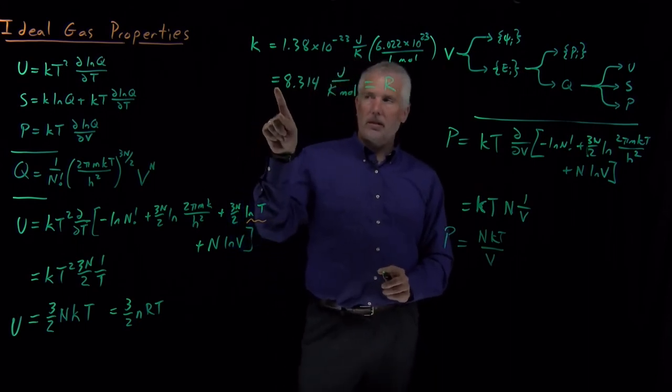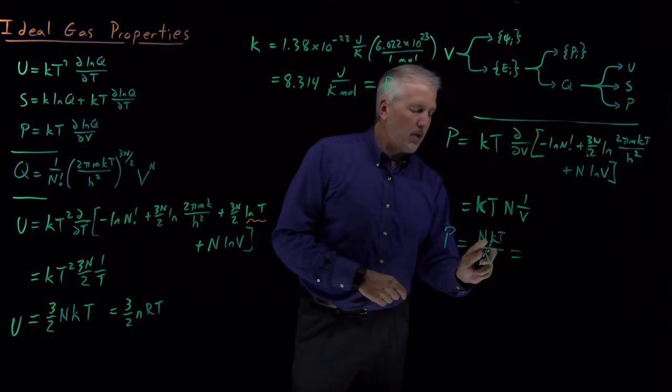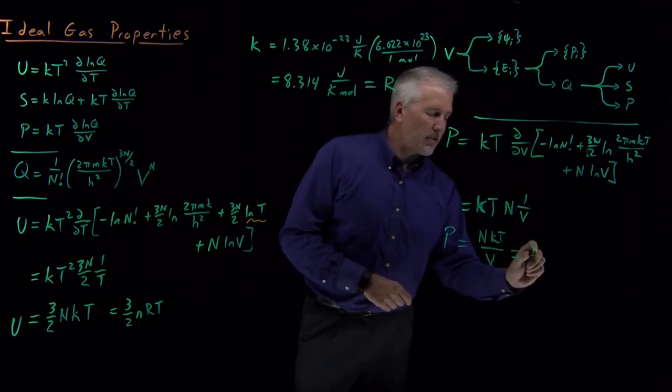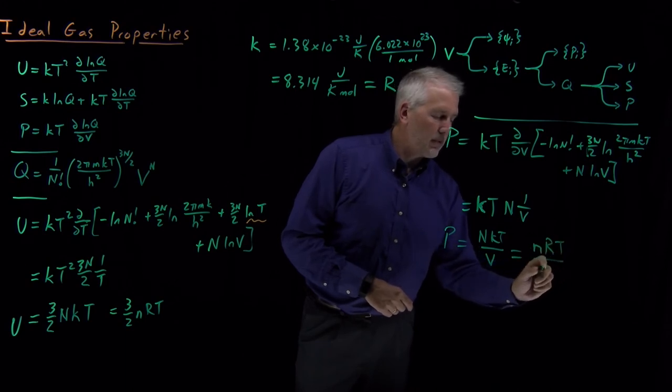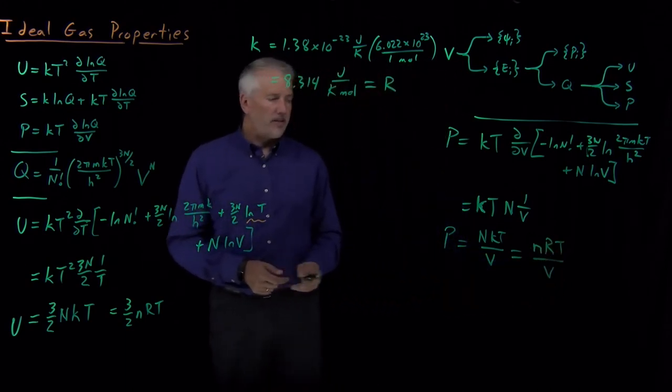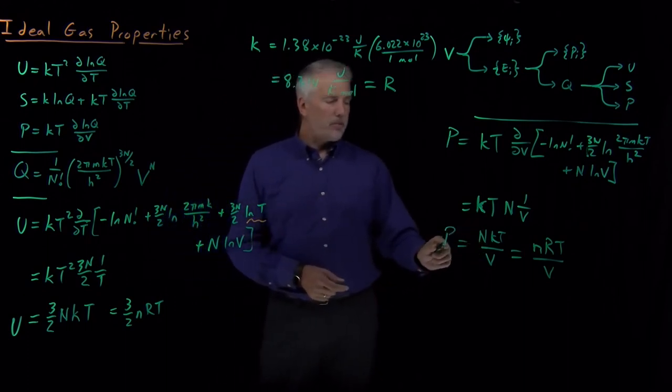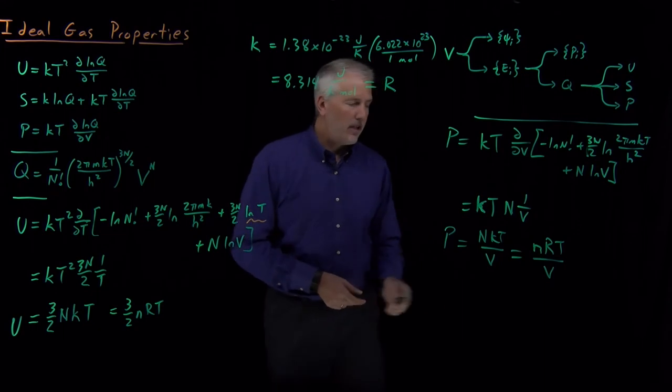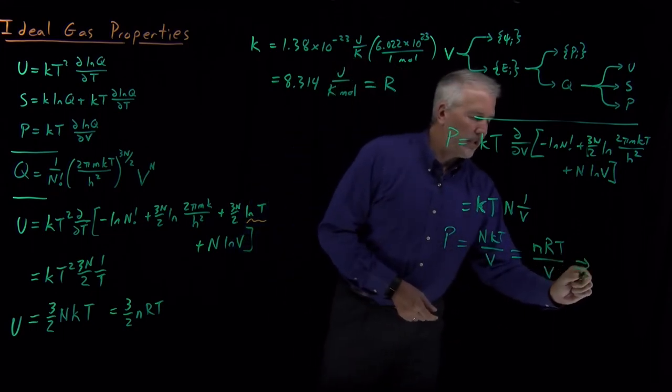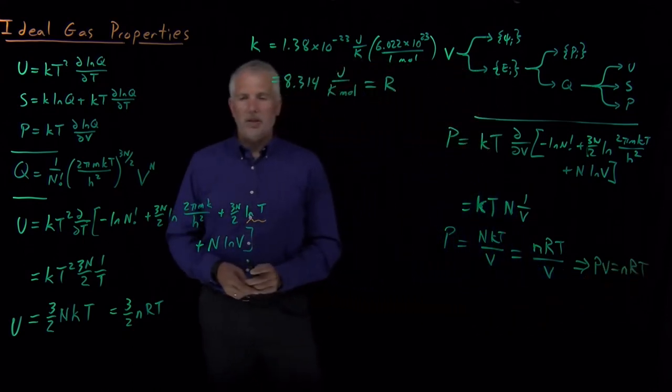Or if we remember that the gas constant and Boltzmann's constant are the same thing. Molecules times Boltzmann's constant is the same as moles times the gas constant. And we found that pressure for an ideal gas is equal to NKT over V, or in slightly more familiar terms, pressure is equal to NRT over V, which of course, if we rearrange it, gives you the result you could have already told me, which is that PV equals NRT.